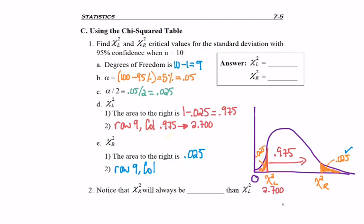I'm going to go to row 9, column .025. So instead of 3 in from the left, this time I'm 3 columns in from the right. And I find 19.023. So 19.023 is the number of standard deviations from the left.